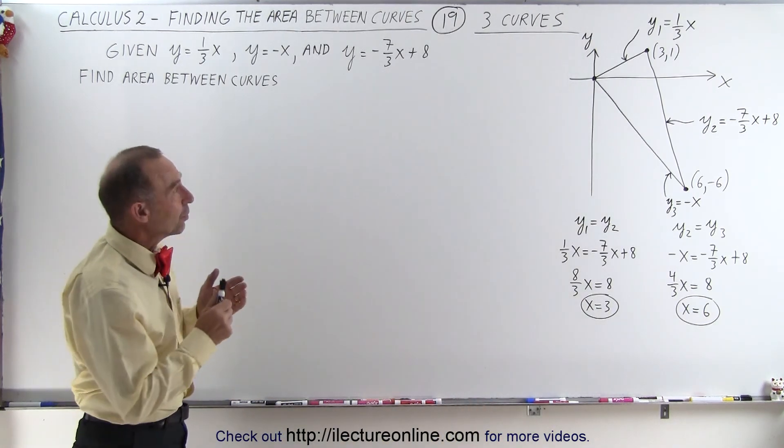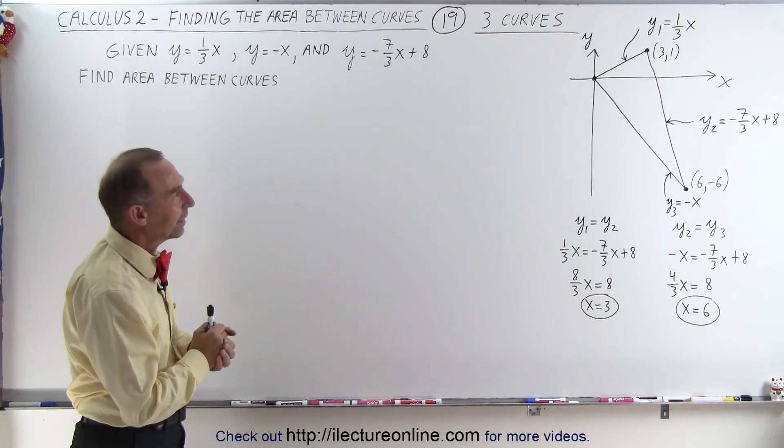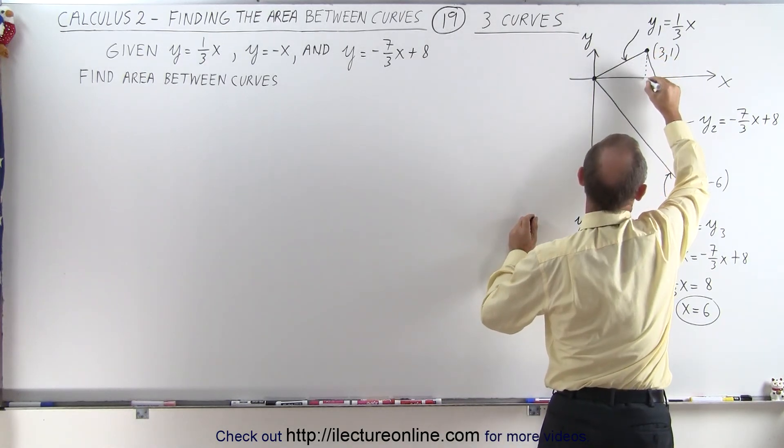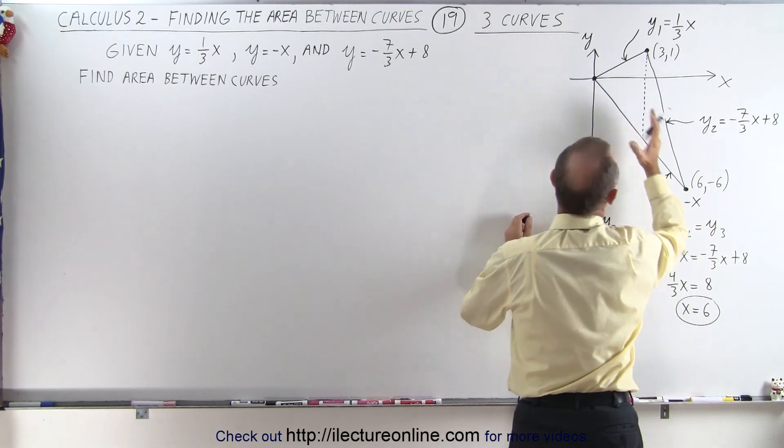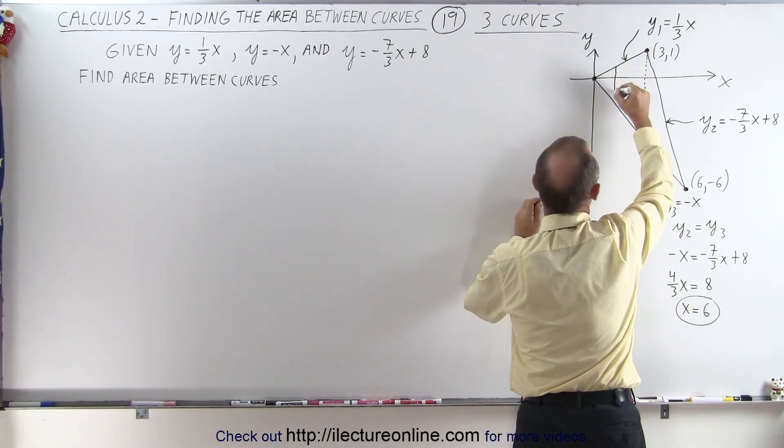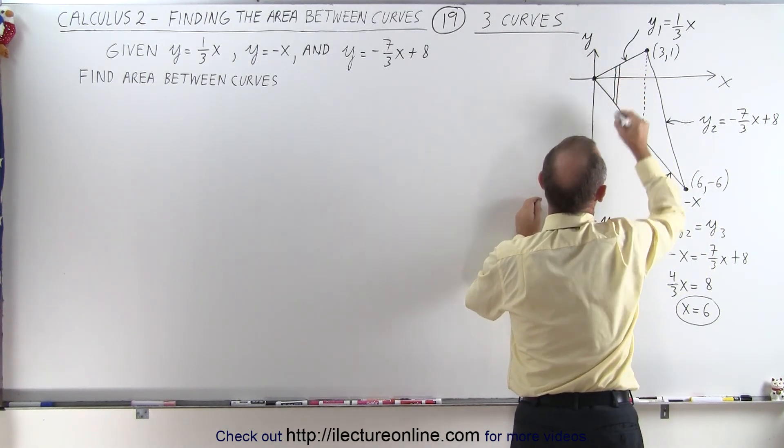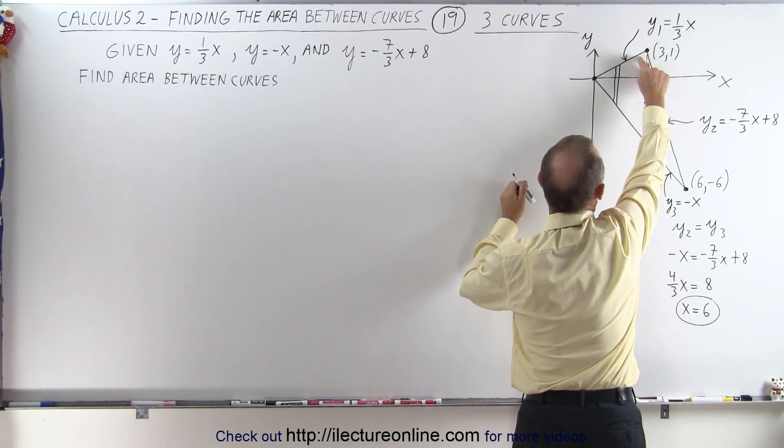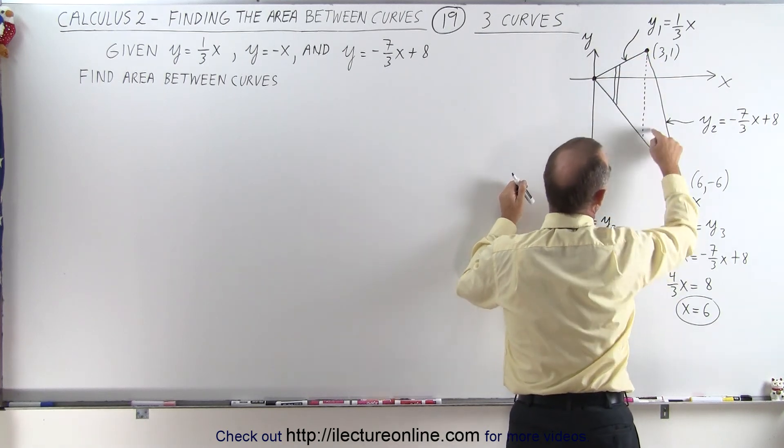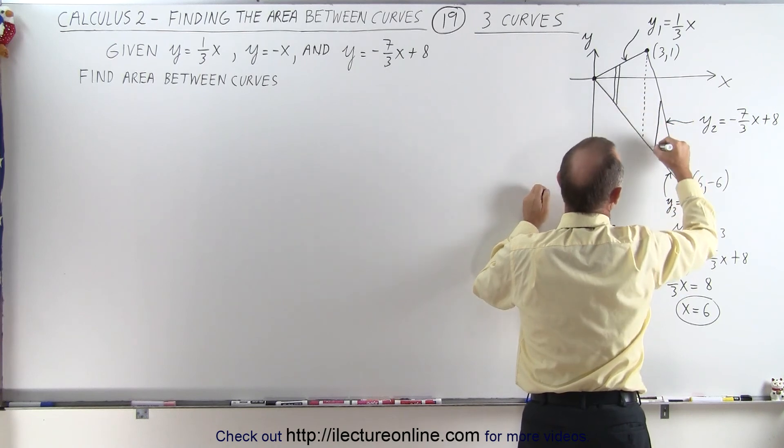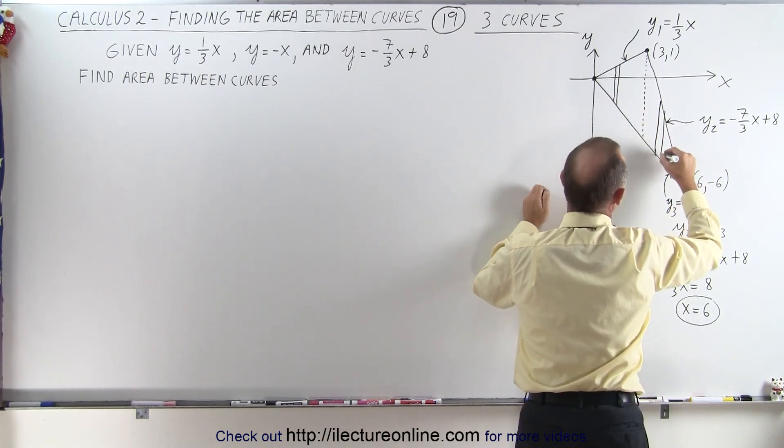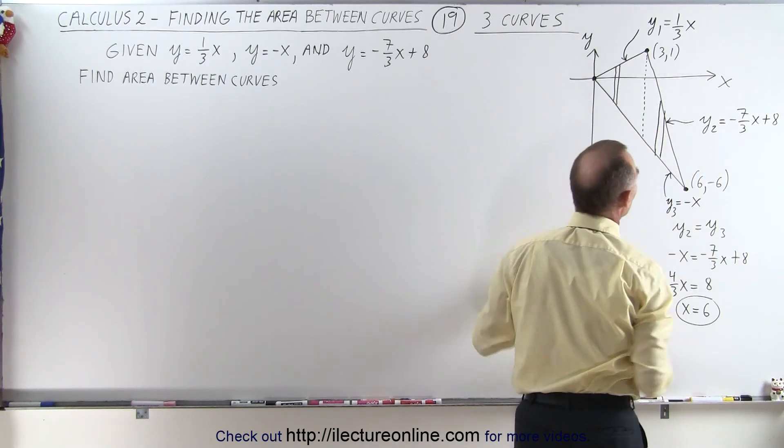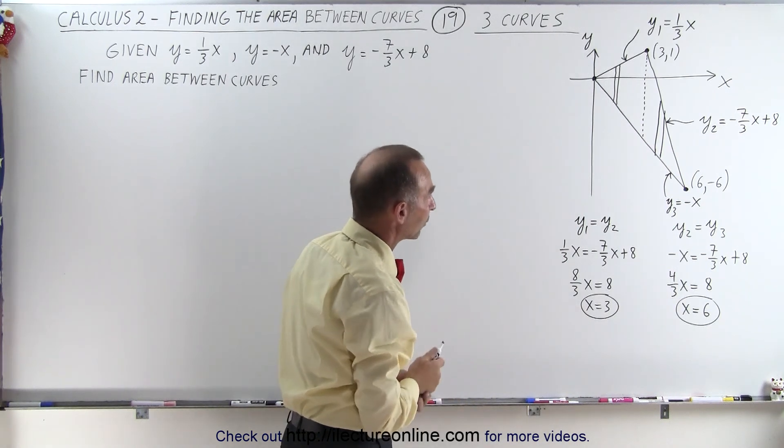So the next thing we need to do is figure out how we're going to subdivide that area. And one thing we could do is we could draw a line straight down from there and divide this into two separate areas, because on the left side, notice if I draw a dA, a small area element, the entire distance from here to there, the dA is defined by the upper line y1 and the lower line y3.